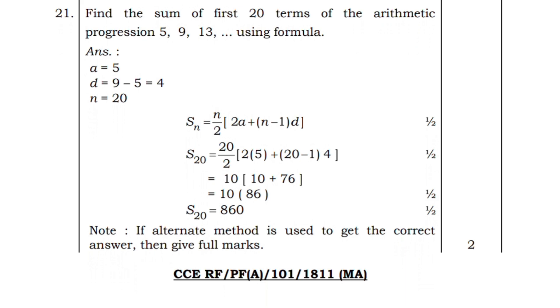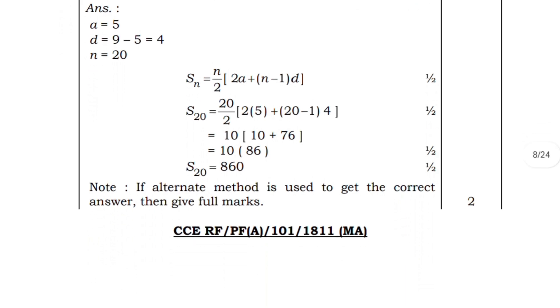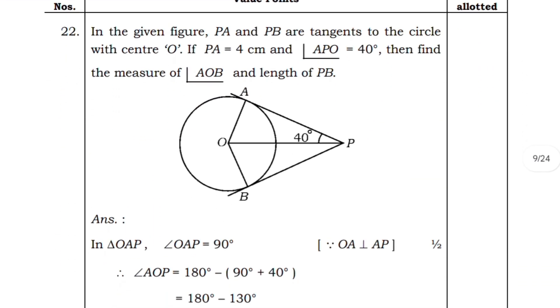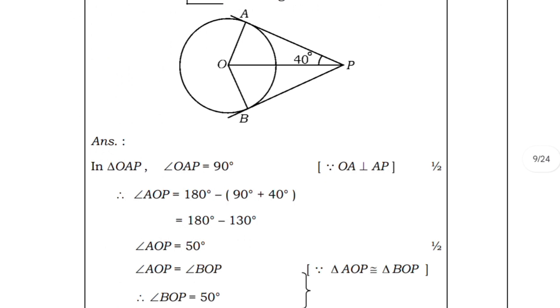Find the sum of numbers - this will be the fixed question from arithmetic progression for two marks. Go through all formulas also, because if you don't know the formulas you cannot solve further.